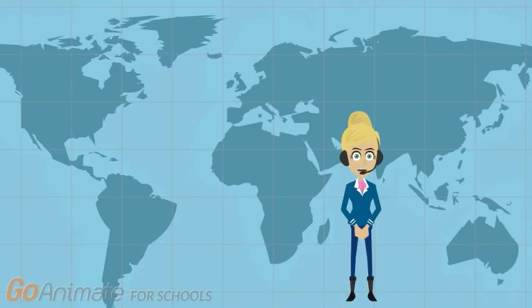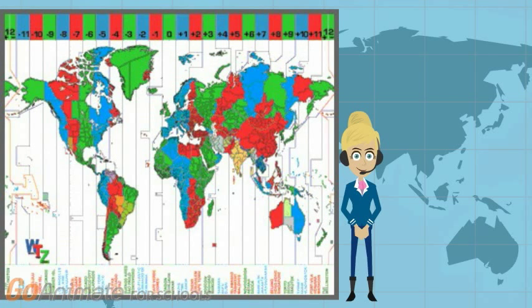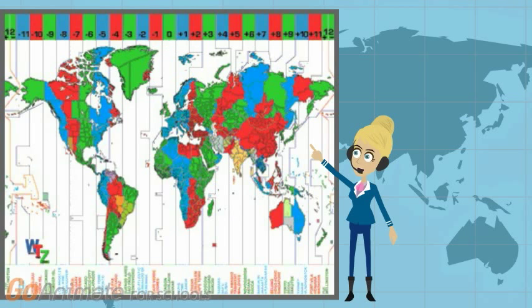Now that you know what Zulu time is, how do you convert your current local time into Zulu time? Look at the time zone chart to the left. Do you see, in the middle of the chart at the top, the number 0? That 0 represents Greenwich Mean Time, Zulu time, or UTC. They are three different names for the same thing. We will call it Zulu time. The other numbers along the top, preceded by a minus or a plus, represent the difference in hours from the local time zone to Zulu time.